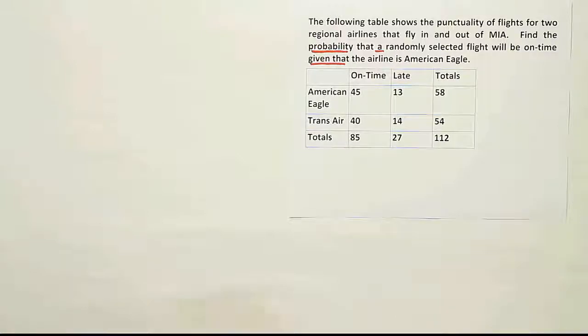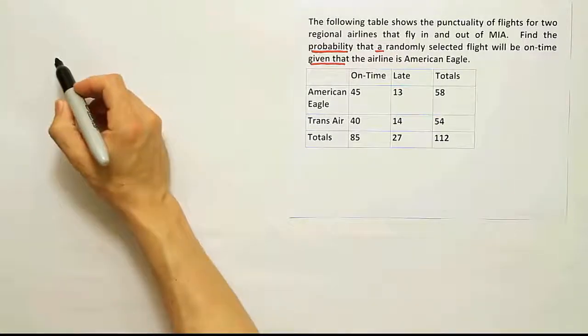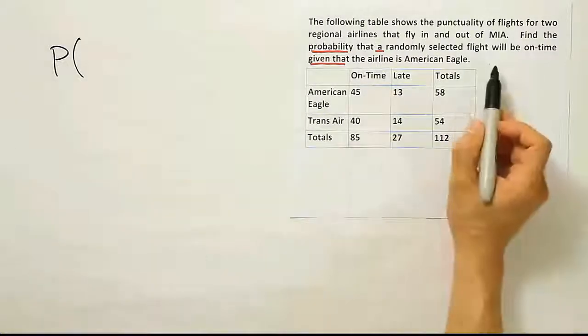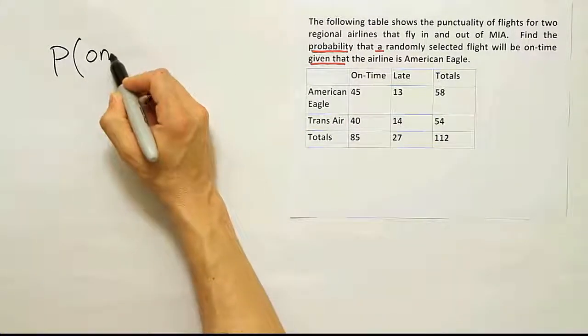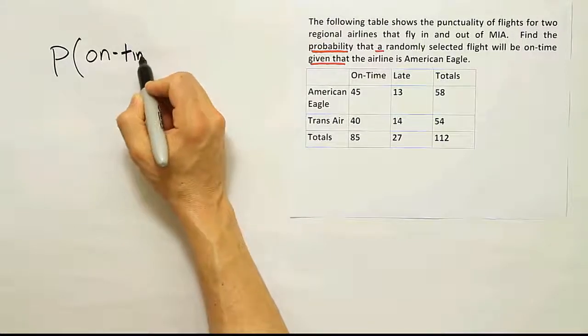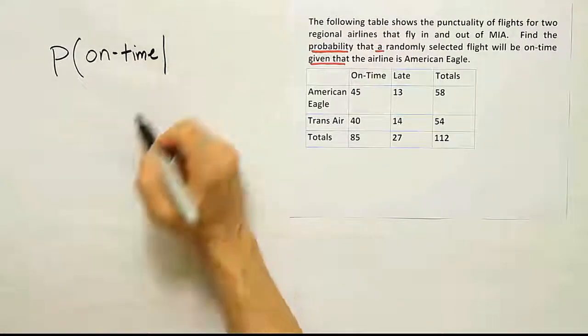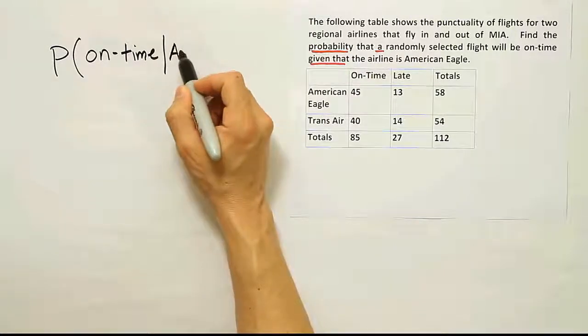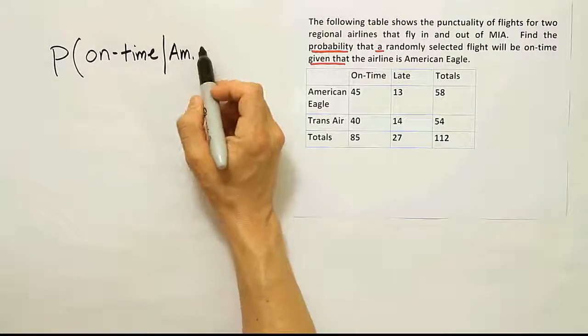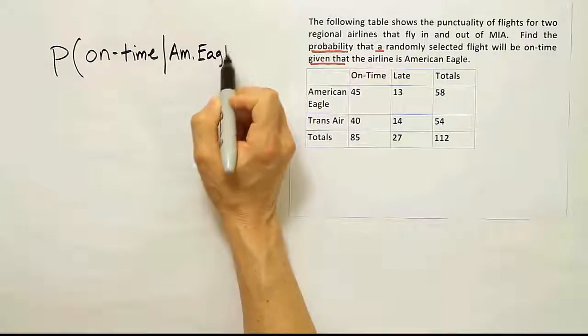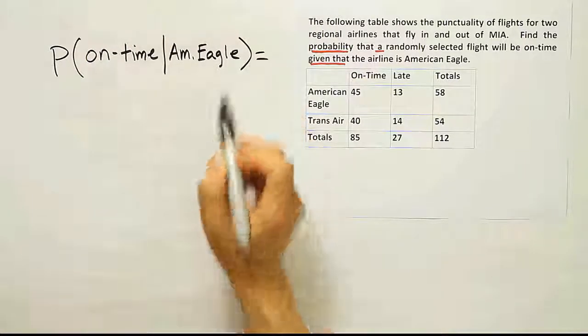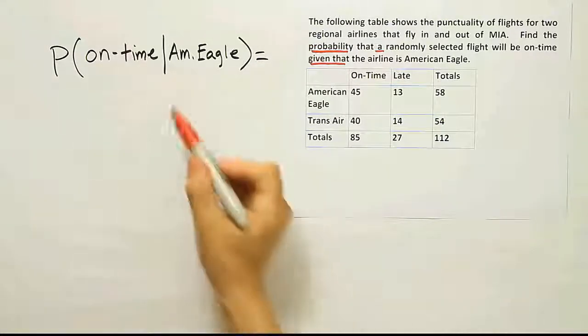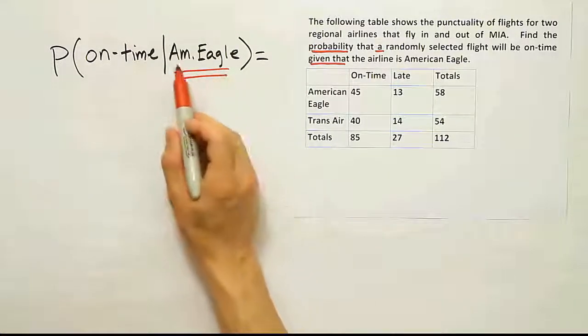So let's start out by writing the probability statement out. It's going to be the probability that the flight will be on time given that the airline is American Eagle. So I'm going to abbreviate American Eagle. Okay, so let's focus only on this condition here, this given that condition here, American Eagle.